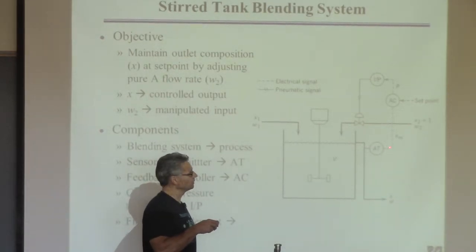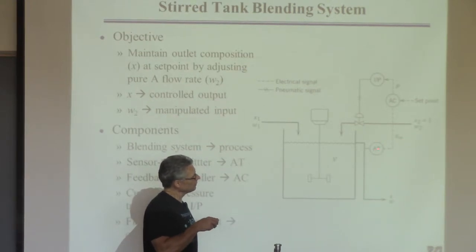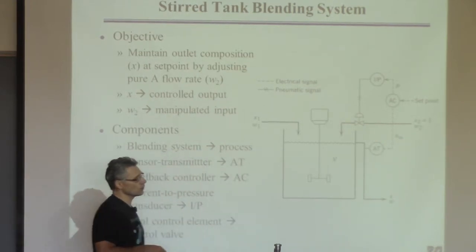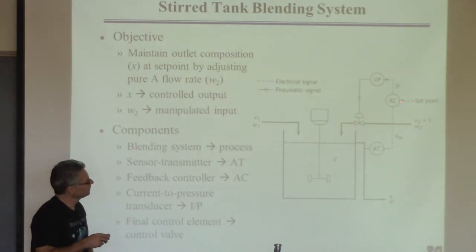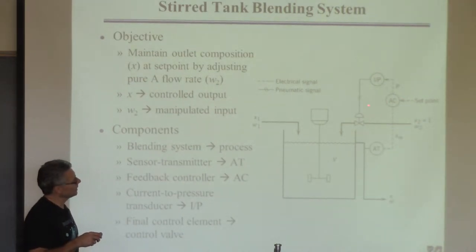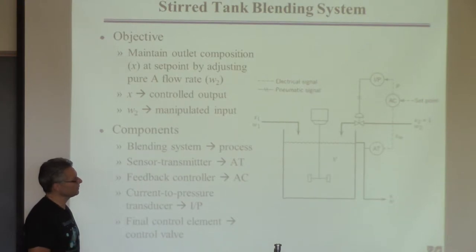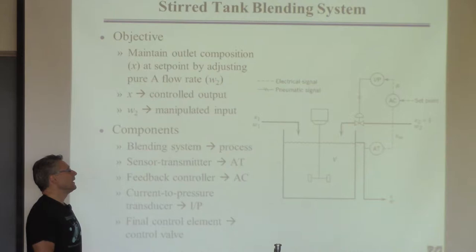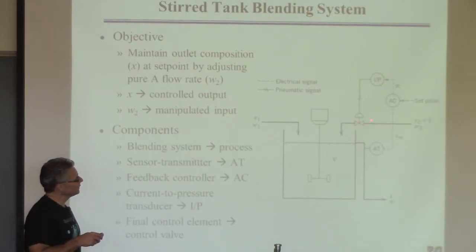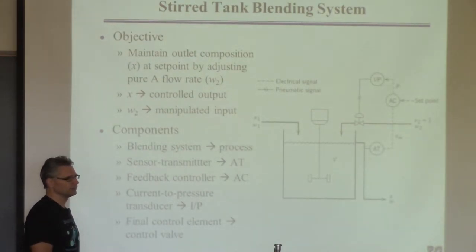We have a measurement of the composition from this analyzer and send it to a controller — AC, where C stands for controller. We compare that to the set point, the desired value of the composition. Then we drive a valve. A valve symbol tells you which stream you can control — streams without valves cannot be manipulated.